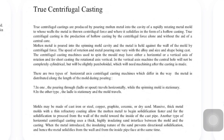True centrifugal casting is the production of a hollow casting by centrifugal force alone, without the aid of cores. Molten metal is poured into a spinning mold cavity and metal is held against the wall of the mold by centrifugal force. The speed of rotation and metal pouring rate vary with the alloy and the size and shape of what is being cast.